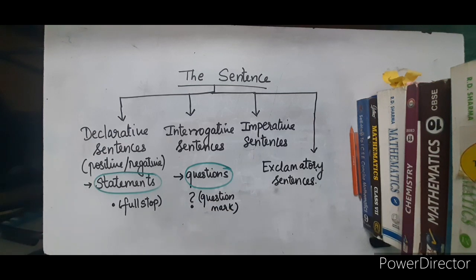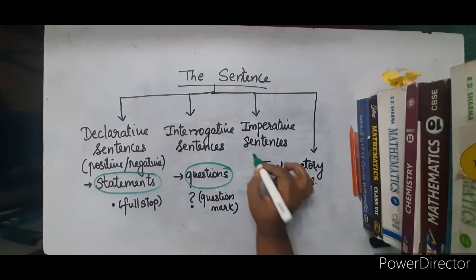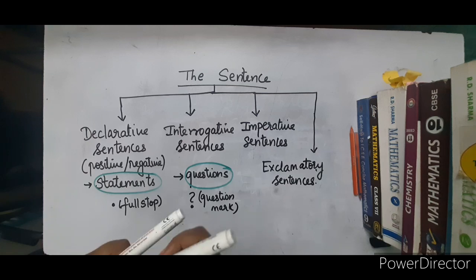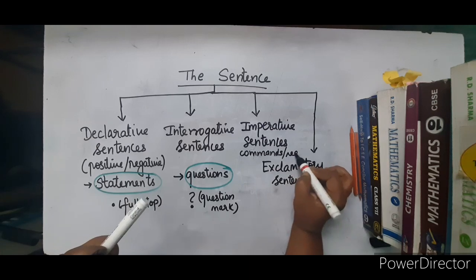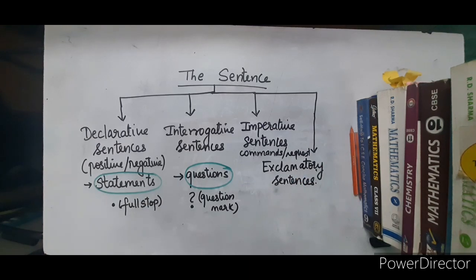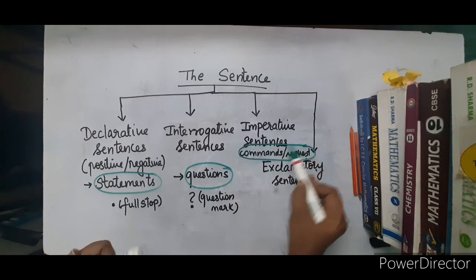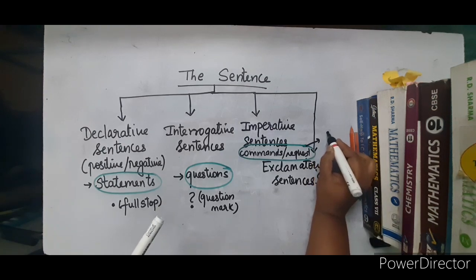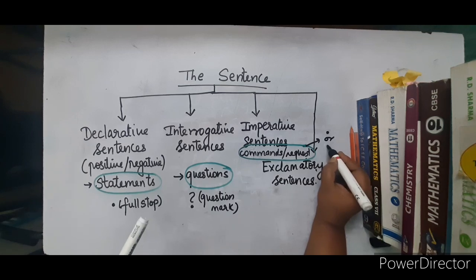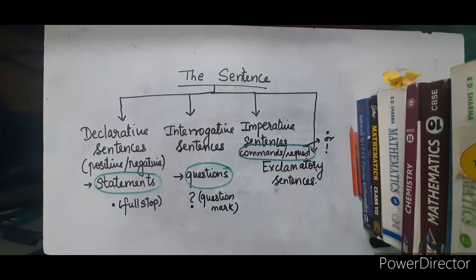The third type of sentences is imperative. The simpler name we could suggest here is any sort of commands or requests. Any sort of commands or requests is a simpler form to understand what imperative sentences are. The end punctuation of these would be either a full stop or an exclamation mark.